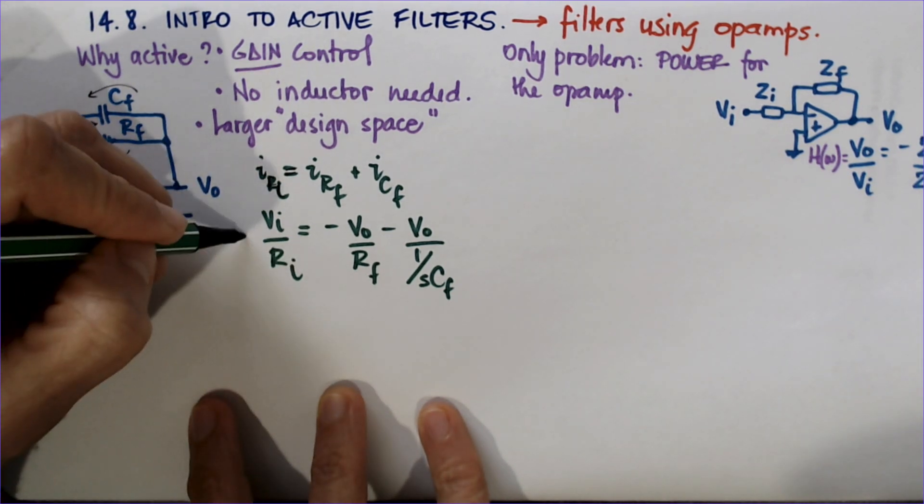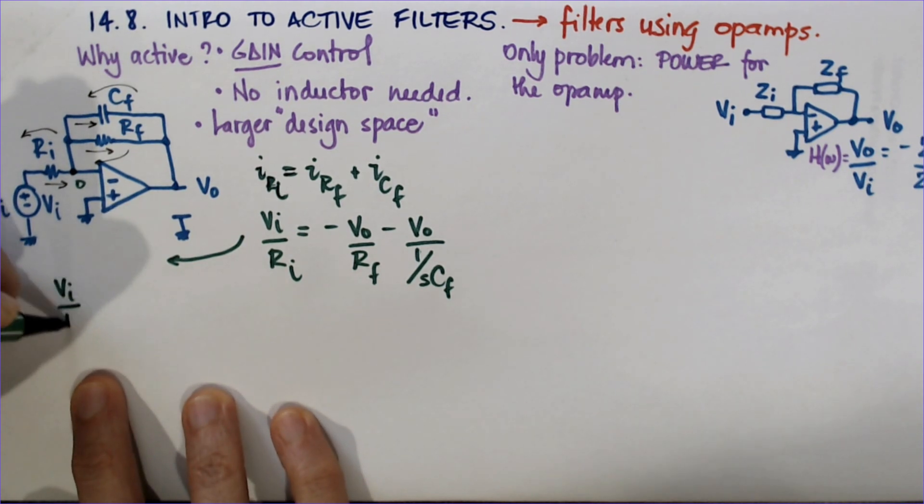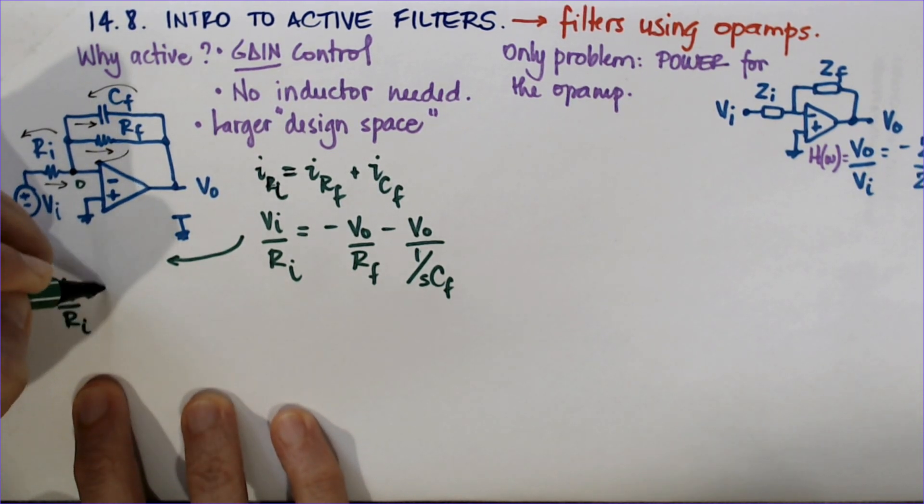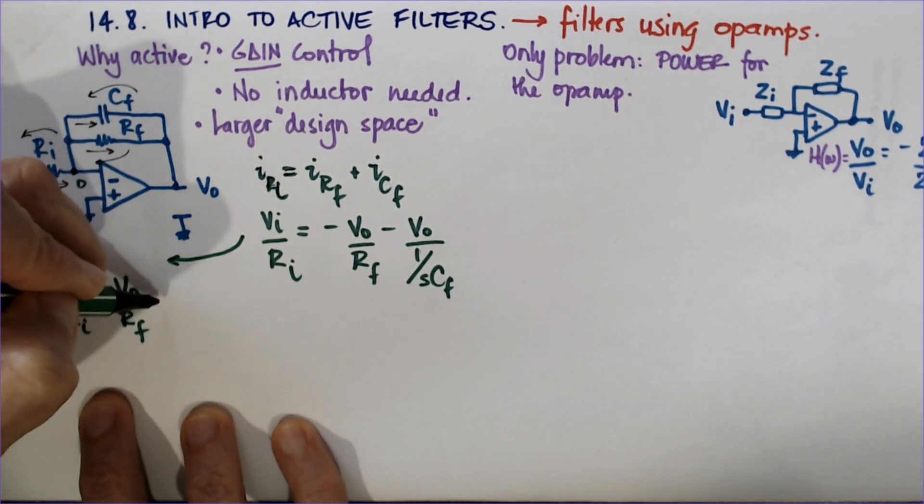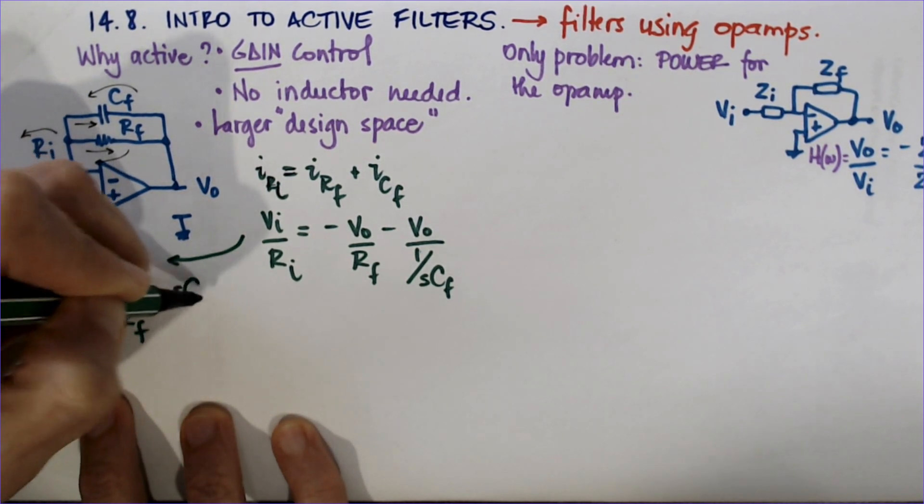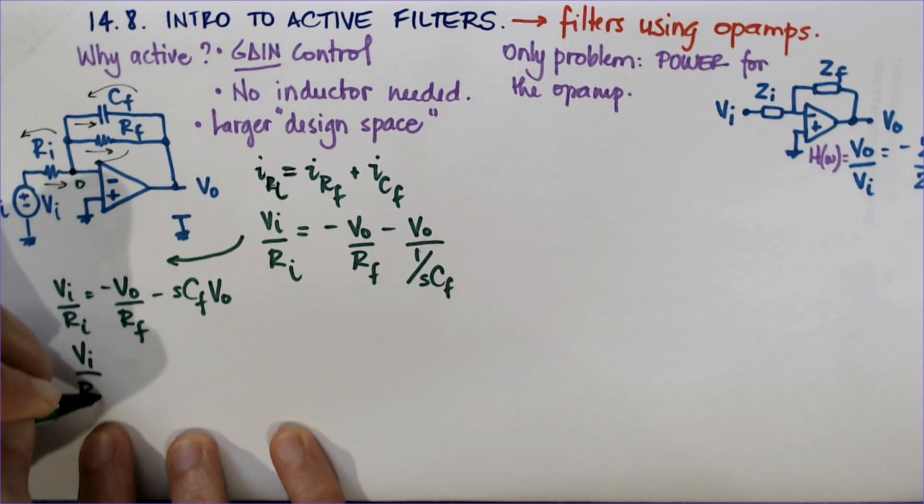IRI equals IRF plus ICF, and I'm going to write the voltages there, which is VI over RI. Remembering that this is zero, it's minus VO over RF minus VO over 1 over SCF.